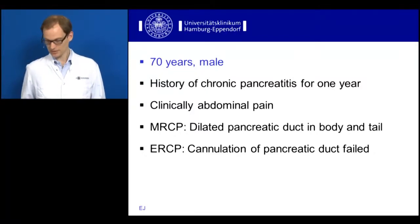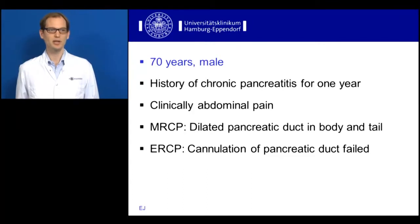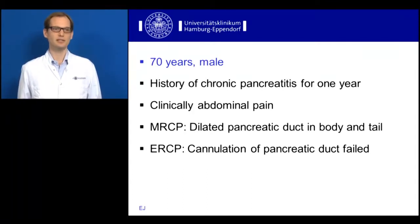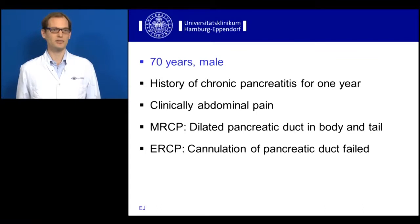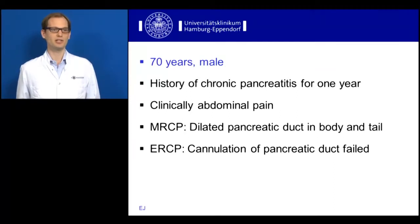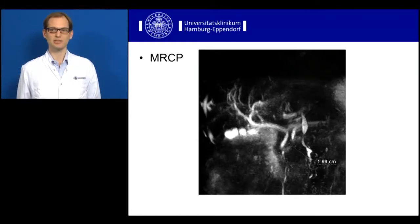Welcome back. The next case we are presenting is a 70-year-old male patient with a history of chronic pancreatitis. He presented clinically with abdominal pain. MRCP showed a stenosis in the pancreatic duct in the head of the pancreas and a dilated pancreatic duct in the body and tail. ERCP cannulation was attempted but failed. This MRCP image shows you the pancreatic duct with a stenosis of about two centimeter length.